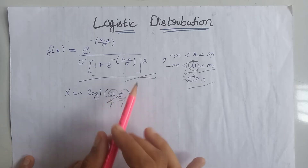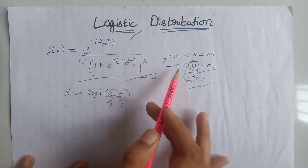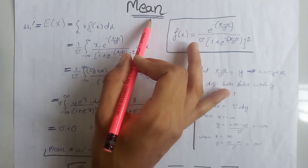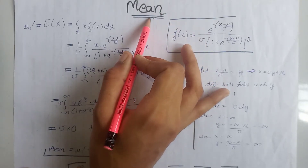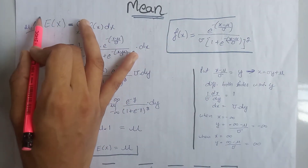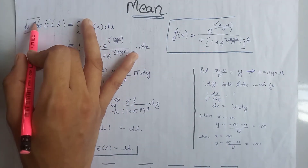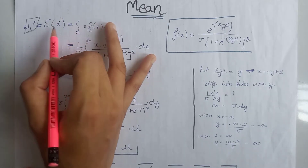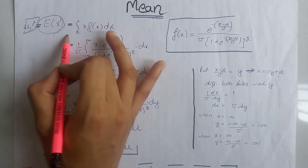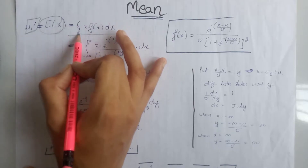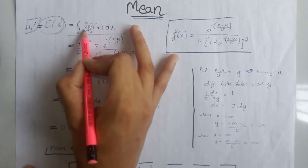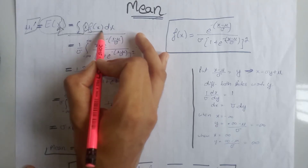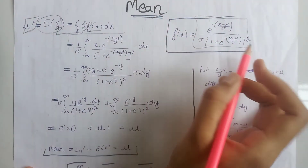The mean and variance of the logistic distribution are different. First, we will calculate the mean of the logistic distribution, and after that, we will calculate the variance. We know that the mean equals the first moment about the origin, that is mu₁ dash, which equals the expectation of x raised to power 1. According to the definition of expectation, here we write the integration over the whole range of x, the term inside the expectation, and the PDF of the logistic distribution.